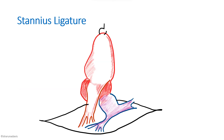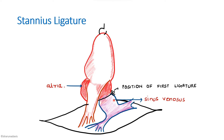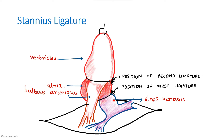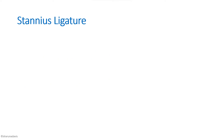Our next experiment is the Stannius ligature. In this experiment, we tie ligatures between the different chambers of the heart and observe the result. The first ligature is placed between the sinus venosus and the atria. After tying the first ligature, we record its effect, and then we tie a second ligature between the bulbus arteriosus and the ventricles. After positioning the second ligature, we take another recording. This is how we perform the Stannius ligature experiment.